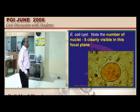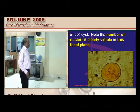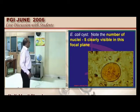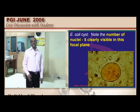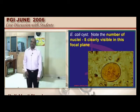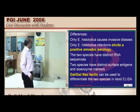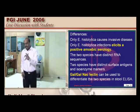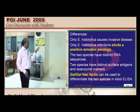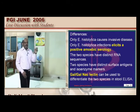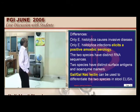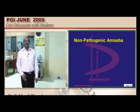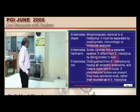Entamoeba coli is not E. histolytica; it can be identified by the number and location of nuclei. Histolytica is the invasive species; most others are non-invasive. Galactose-N-acetylgalactosamine (Gal/GalNAc) lectin is useful to differentiate E. nana from histolytica. Non-pathogenic amoeba include E. dispar, E. coli, and E. nana.